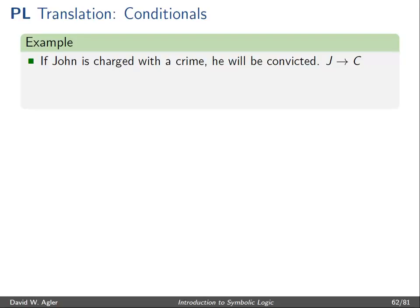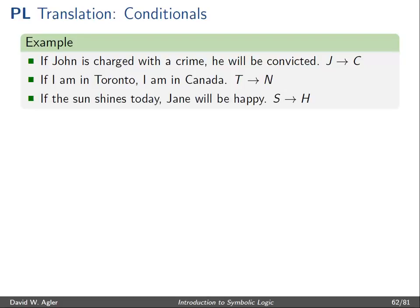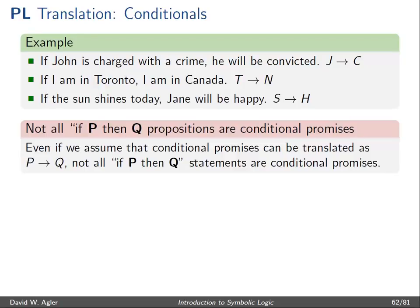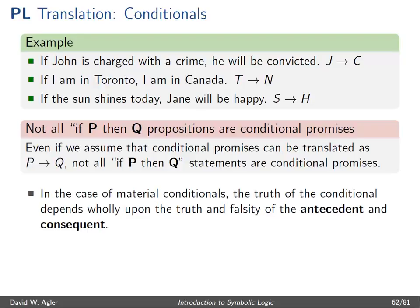For example: if John is charged with a crime, he will be convicted — translated as J right-arrow C. If I am in Toronto, I am in Canada — T right-arrow N. If the sun shines today, Jane will be happy — S right-arrow H. However, not all if-p-then-q statements are conditional promises. Sometimes we utter if-p-then-q statements without promising anything. So there's some skepticism as to whether these too can be translated into the language of symbolic logic.